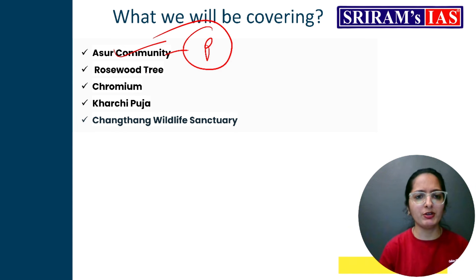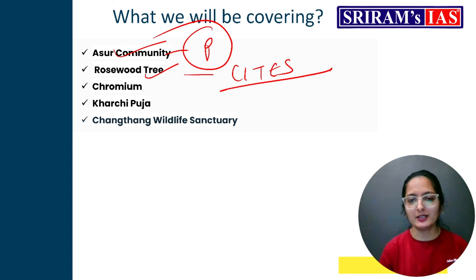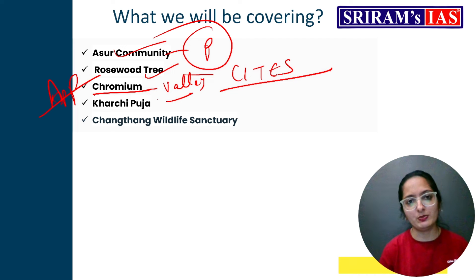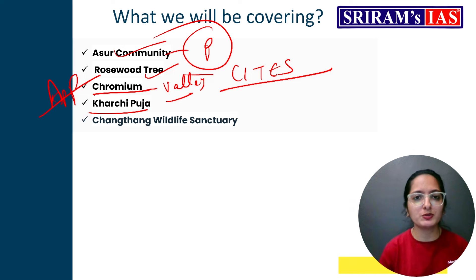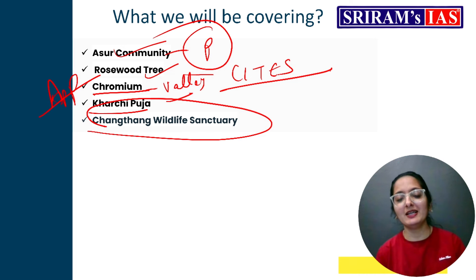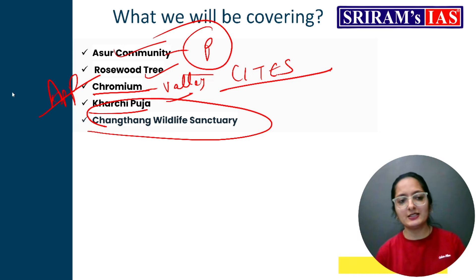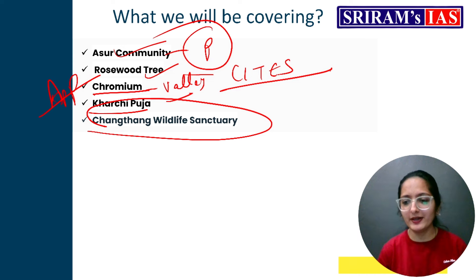Then we will talk about the Rosewood tree — why it is in the news, where it is found, and why it is significant. Last but not least, we will talk about Changtang Wildlife Sanctuary — where it is found and everything in detail. This is today's session, which is prelims-oriented and covers several articles, so do revise as well.